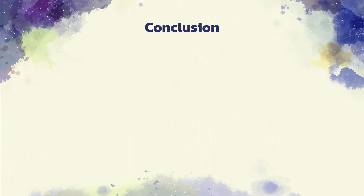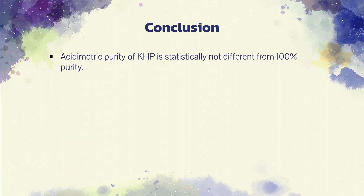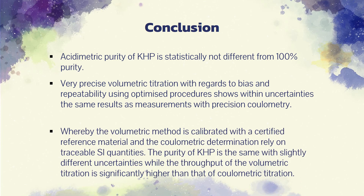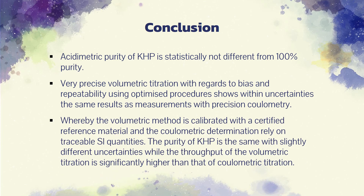In conclusion, the acidimetric purity of KHP is statistically not different from 100% purity. Very precise volumetric titration, with regards to bias and repeatability using optimized procedures, shows within uncertainties the same results as measurements with precision coulometry, whereby the volumetric method is calibrated with a certified reference material and the coulometric determination relies on traceable SI quantities. The purity of KHP is the same with slightly different uncertainties, while the throughput of the volumetric titration is significantly higher than that of coulometric titration.